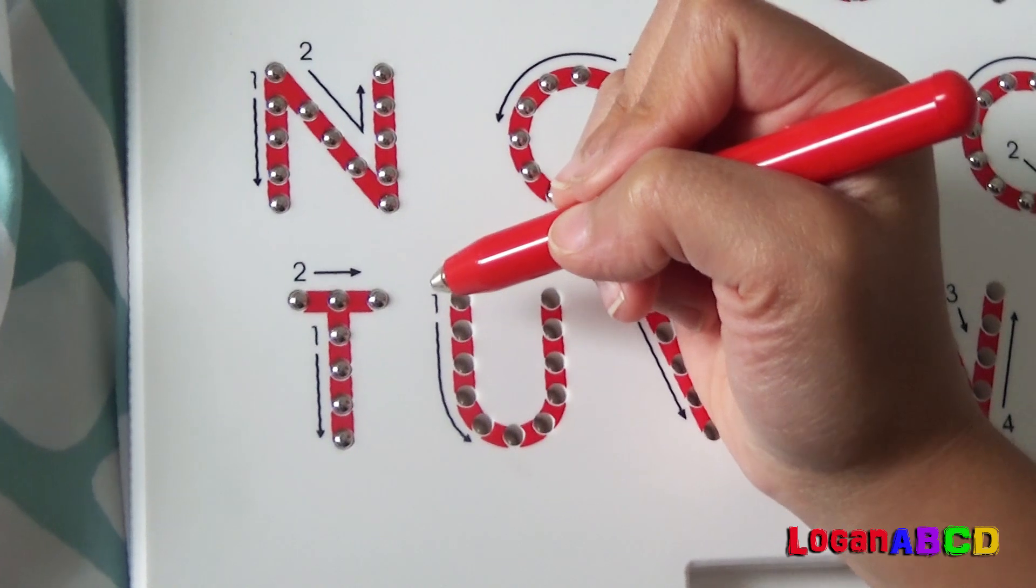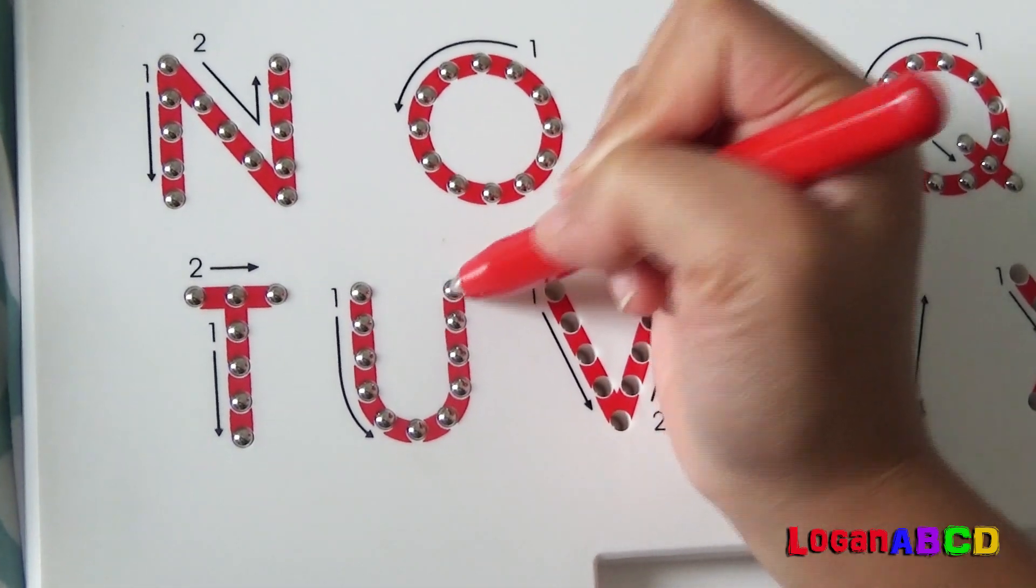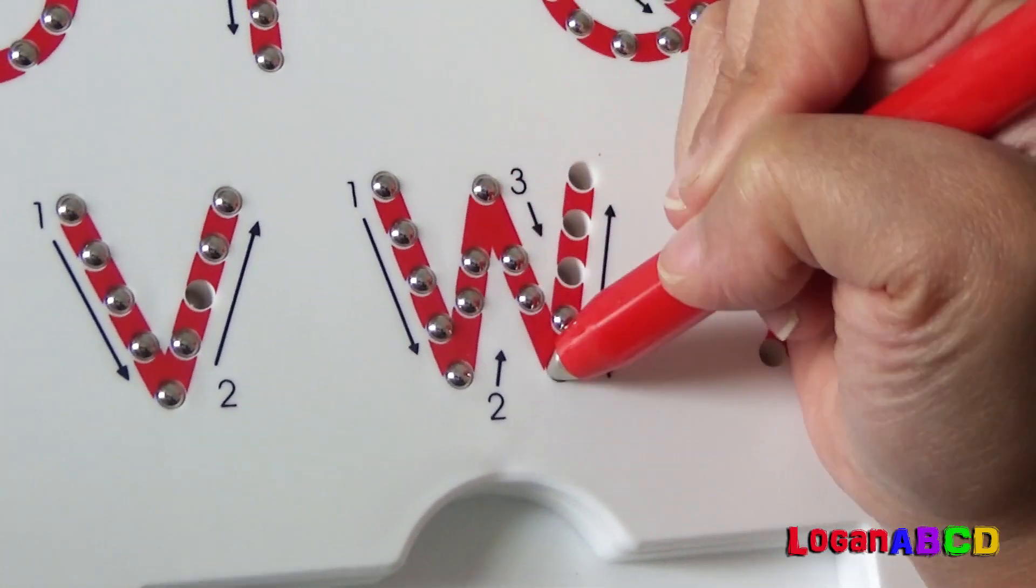T, T for tight. U, U for umbrella. V, V, V for violin. W, W, W for water.